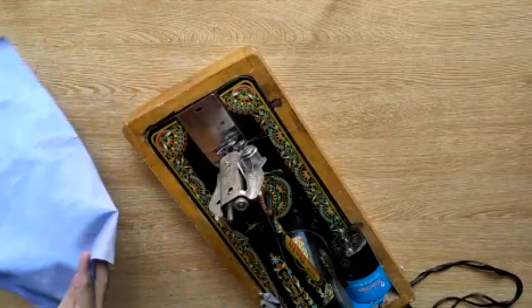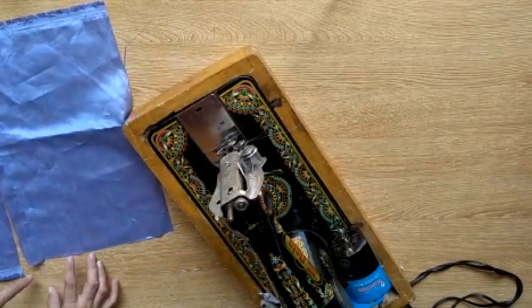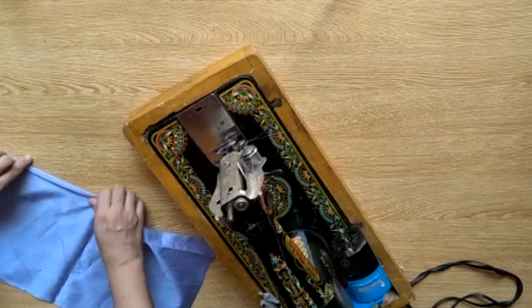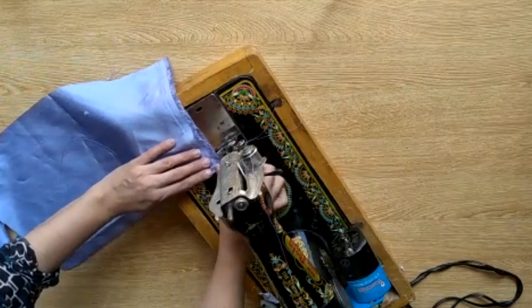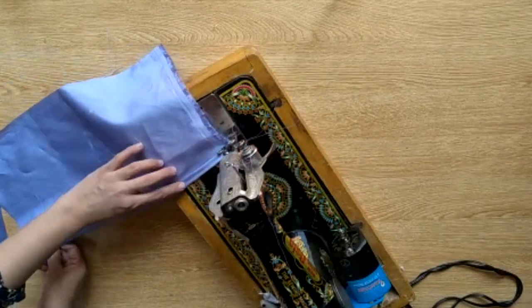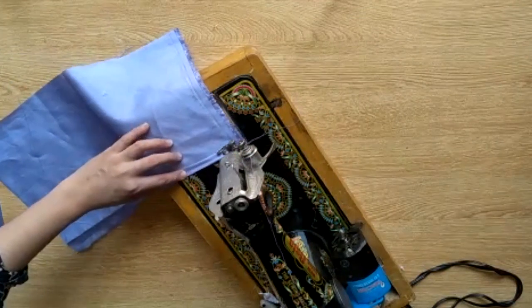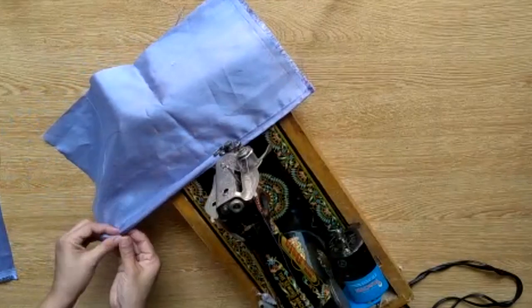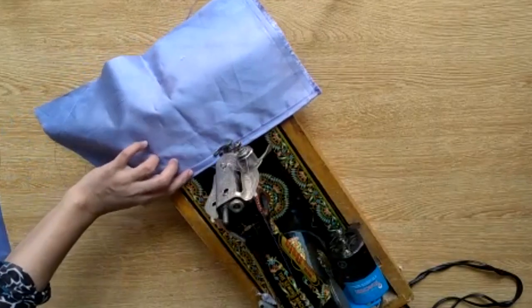Now we have to stitch the back side. This is the back side. I have to cut it from the bottom. Now stitch it like this. You have to cut the back side in the middle. So we are going to stitch it like this.